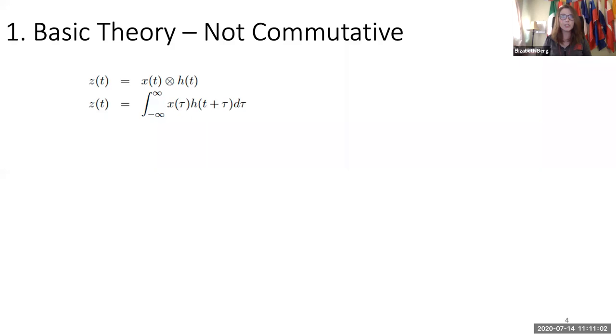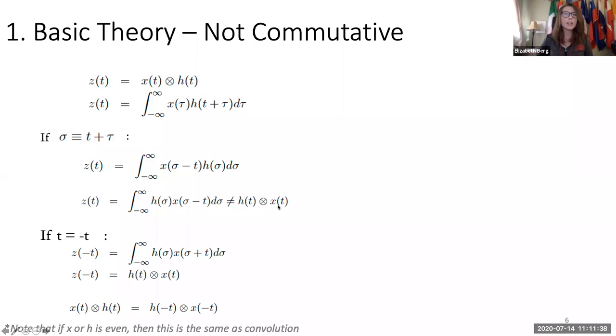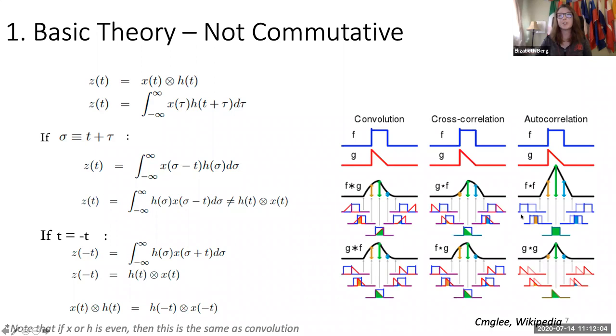I also want to mention that cross-correlation, unlike convolution, is not commutative. So first let's prove how it's not commutative. If we substitute sigma equal to t plus tau in, then we can obtain these results. We get sigma minus t here. And we can see that that's not actually equal to h of t cross-correlation of x of t. If we reverse it, z of minus t gives us h of t cross-correlation of x of t, which is the time flipped result.